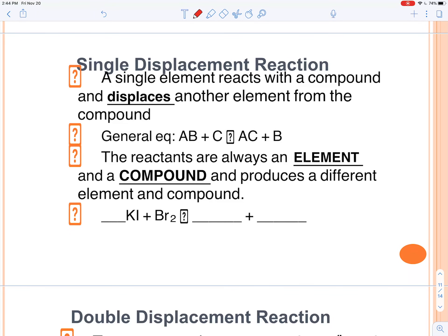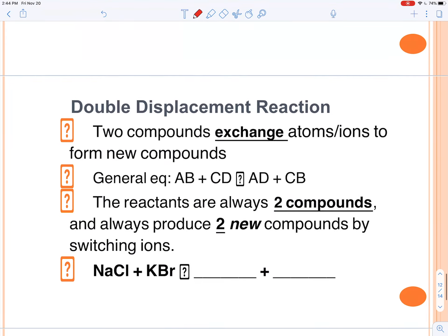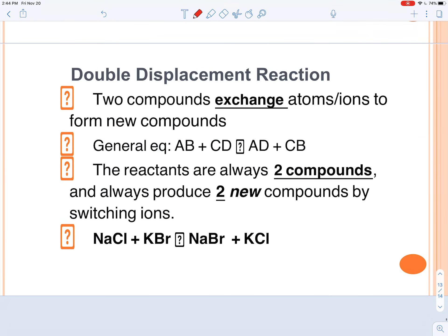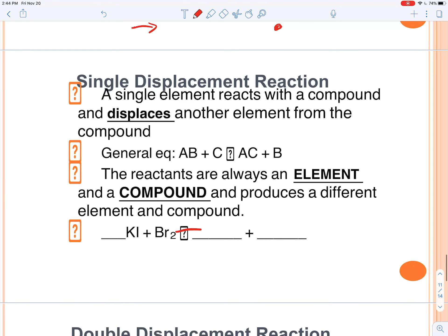In single displacement, element displaces another element in the compound. So here, same thing, we're going to see that. And so here the bromine is going to displace the potassium, sorry, the iodine.